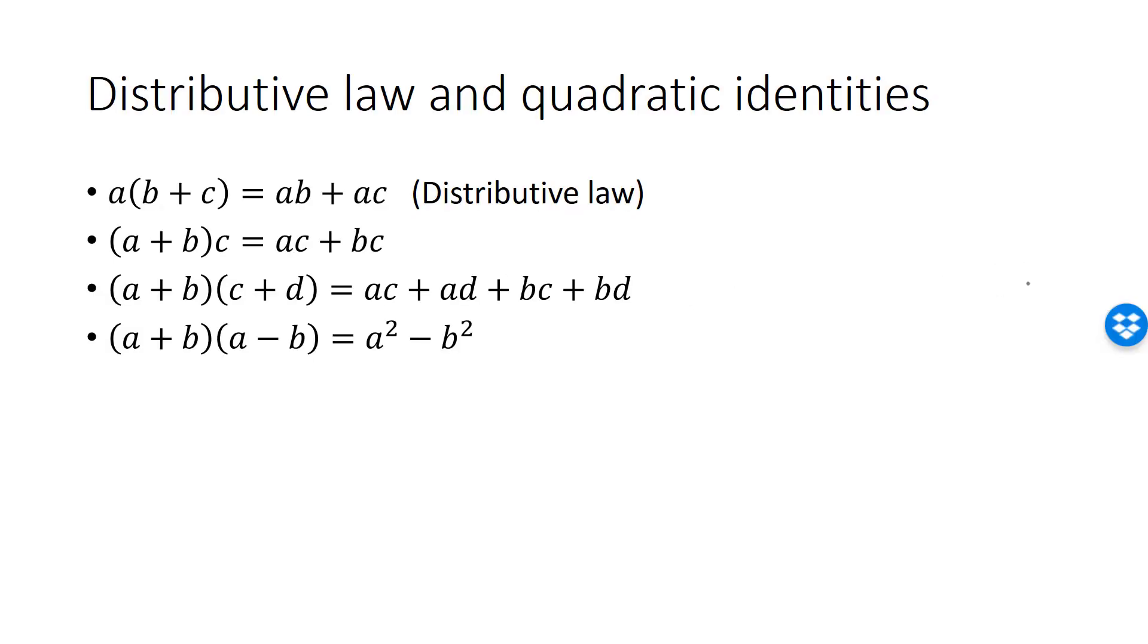The next quadratic identity is the following. This is a special case of the previous one, where the terms in the first parenthesis are the same as the terms in the second parenthesis.